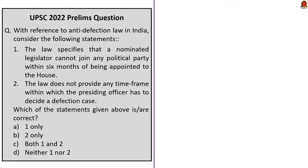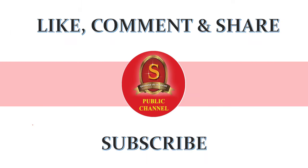Question 4 is about anti-defection law. Two statements are given. Statement 1 says the law specifies that a nominated legislator cannot join any political party within six months of being appointed to the house — this is wrong, as he can join within six months but will be considered a defector after the expiry of the first six months. Statement 2 says the law does not provide any time frame within which the presiding officer has to decide a defection case — this is correct. So the correct answer is option B, statement 2 only. With this, we come to the end of the news article discussion. If you liked the video, hit like, comment, and subscribe to Shankar IAS Academy YouTube channel.